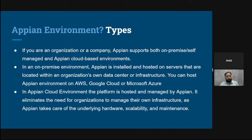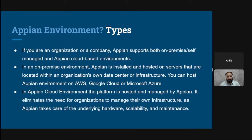The Appian Cloud environment is hosted and managed by Appian itself — you don't need to manage anything. You simply get the Appian URL and credentials and can directly access as a developer. This deployment eliminates the need for organizations to manage their own infrastructure. Appian handles everything — hardware, scalability, and maintenance — and cloud deployment provides flexibility, scalability, and rapid deployment.